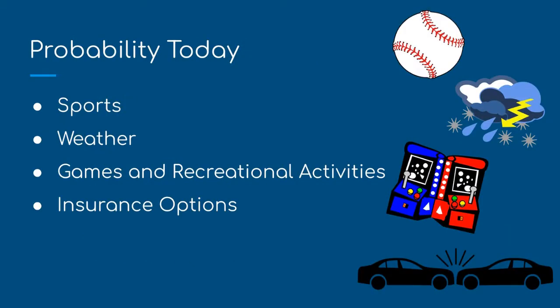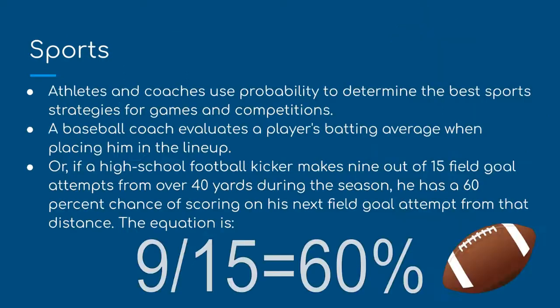Probability Today. Today, probability is used in sports, in determining the weather, in games and recreational activities, and in insurance. In sports, athletes and coaches use probability to determine the best strategies for games and competitions. A baseball coach evaluates a player's batting average when placing him in the lineup — for example, a player with a .200 batting average has gotten 2 hits out of every 10 at-bats, versus a player with a .400 batting average who is more likely to get a hit. Another example: if a high school football kicker makes 9 out of 15 field goal attempts from the 40-yard line, he has a 60% chance of success.